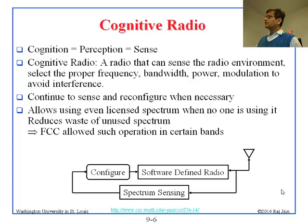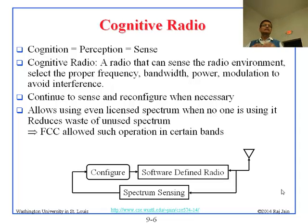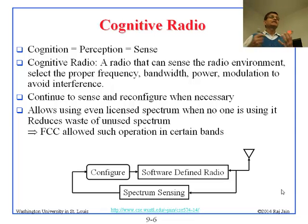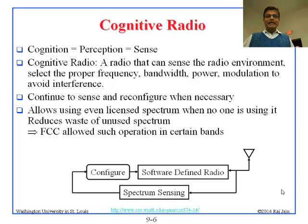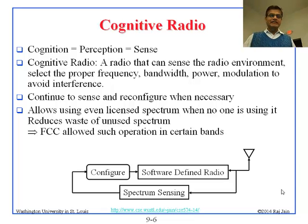Cognitive radio will see what frequencies are being used, then decide what frequency to use and reconfigure — what modulation is good, and things like that. This extra logic around SDR makes it a cognitive radio. This is a continuous process: it continuously senses and continuously reconfigures itself.